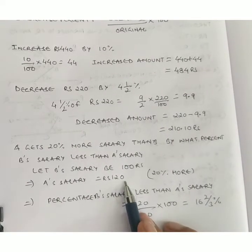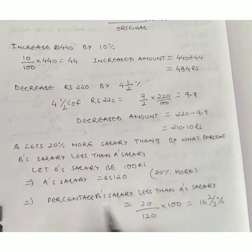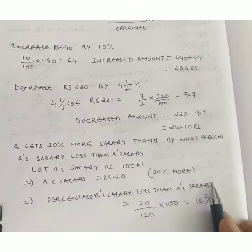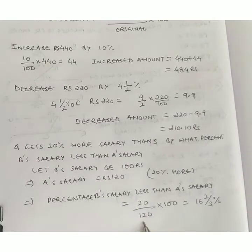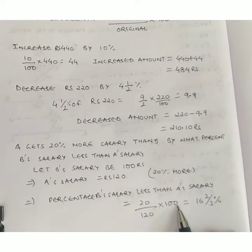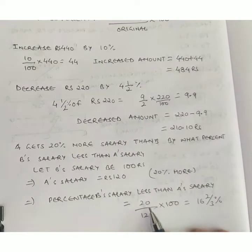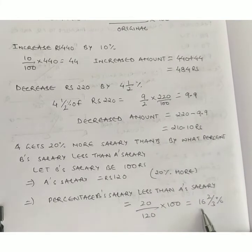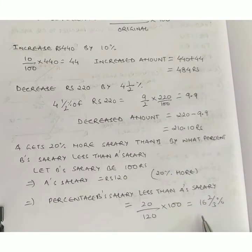The percentage by which B's salary is less than A's salary equals 20 upon 120 into 100. When you cancel out, you get 16⅔ percent.